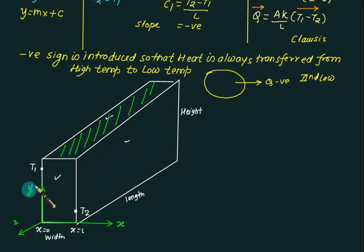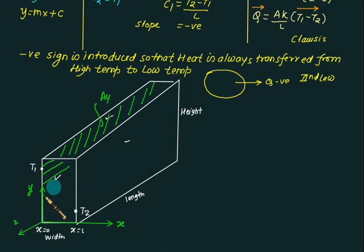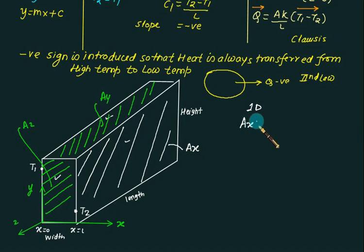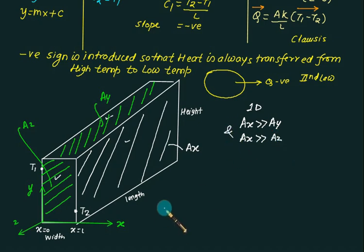We neglect heat transfer in the y direction and similarly in the z direction. The area perpendicular to x direction is very very large compared to the remaining two areas — Ax >> Ay and Ax >> Az. When this condition holds, the problem is one-dimensional. We only show the thickness; area is always perpendicular to the plane. Pure one-dimensional is an assumption — some heat will transfer in y and z directions also.